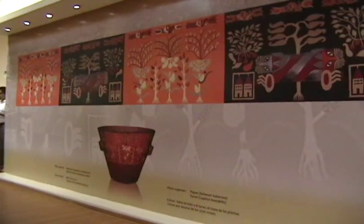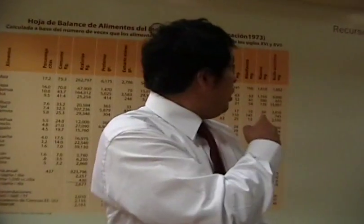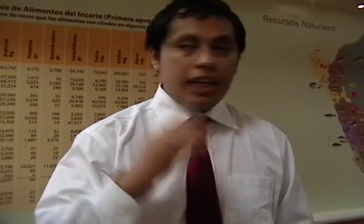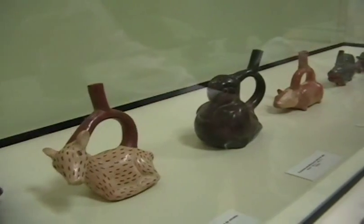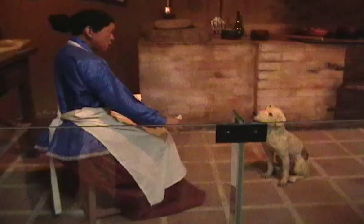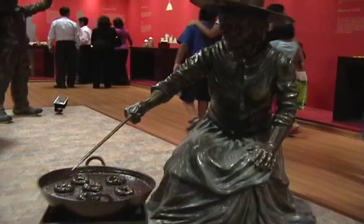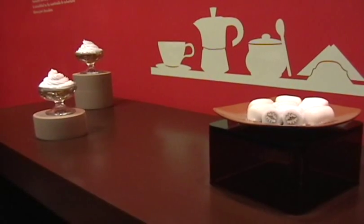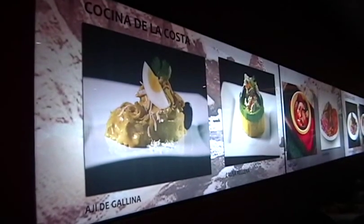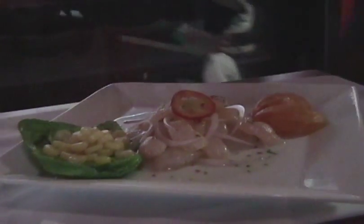Este centro tiene varias salas. Primero tenemos una sala donde pueden ver computación y un mapa del Perú que demuestra los recursos naturales. Esta área es de los recursos naturales nativos del Perú: agronomía, productos nativos, ganadería y un poco de pesca. Después al otro lado tenemos lo que es la cocina, estilos y técnicas. Más adelante tenemos la influencia colonial, lo que se trajeron los españoles. Y después ya entramos a la época republicana donde vemos las comidas más contemporáneas, como el pollo a la brasa, el pisco, el ceviche y otras cosas más.